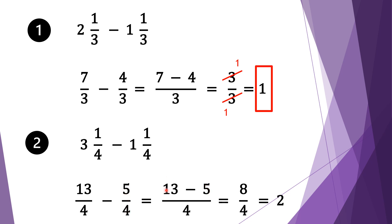Now we have a normal subtraction of fractions with the same denominators, so we take four as a common factor. Four divided by four is one, one times thirteen is thirteen. For the second fraction, four divided by four is one, one times five is five. Thirteen take away five is eight. Eight divided by four is two, and four divided by four is one. Our final solution is two.